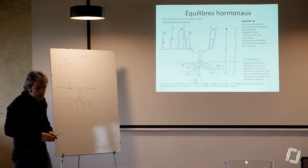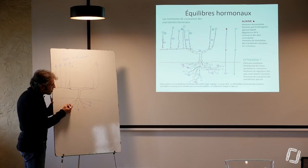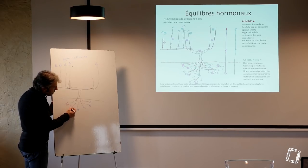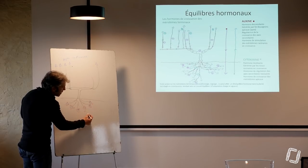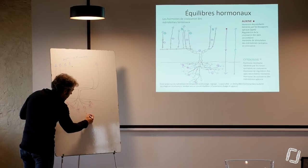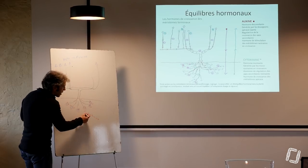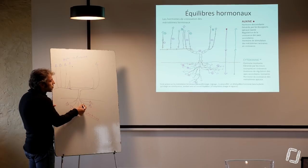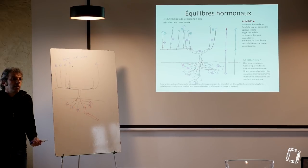Donc, l'auxine va aussi stimuler la recherche d'éléments minéraux dans le sol, en quelque part. De l'autre côté, on a une autre hormone fabriquée par ces organes racinaires en croissance. Cette hormone-là, c'est la cytokinine. Cette cytokinine est une hormone de régulation des axes secondaires racinaires, c'est-à-dire, en quelque part, elle dit, et là, on a déjà prospecté, allons prospecter un peu plus loin.